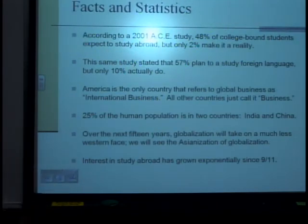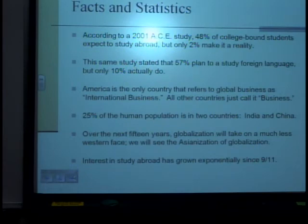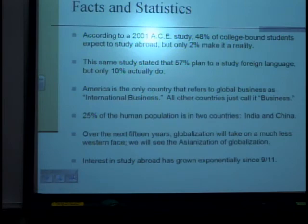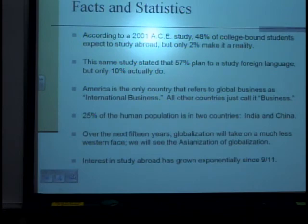Facts and statistics: according to a 2001 ACE study, 48% of college-bound students expect to study abroad, but only 2% make it a reality. This same study stated that 57% plan to study a foreign language, but only 10% actually do. America is the only country that refers to global business as 'international business' — all other countries just call it business. 25% of the human population is in two countries, India and China. Over the next 15 years, globalization will take on a much less Western phase. We will see the Asianization of globalization. Interest in study abroad has grown exponentially since 9/11.